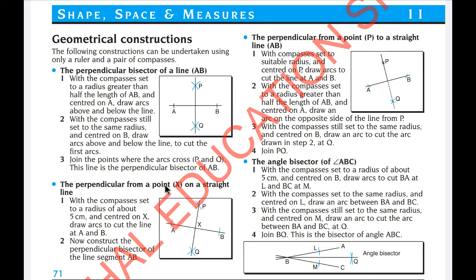Next one, the perpendicular from a point X on a straight line. They are giving the straight line, they mark X and we need to draw a perpendicular from there. With the compasses set to a radius of about 5 cm and centered on X, draw arcs to cut the line at A and B. Now, construct perpendicular bisect of the line segment. Here the point is given. Your perpendicular bisect should pass through here. So this is 90 and these two are equal.